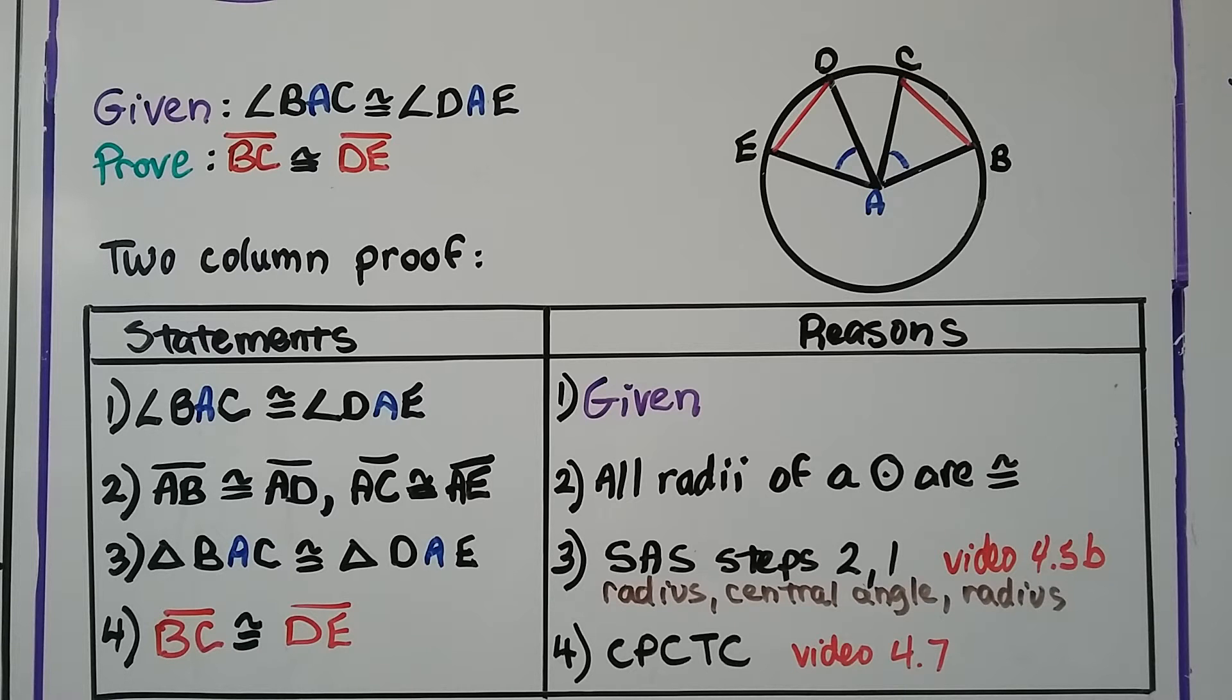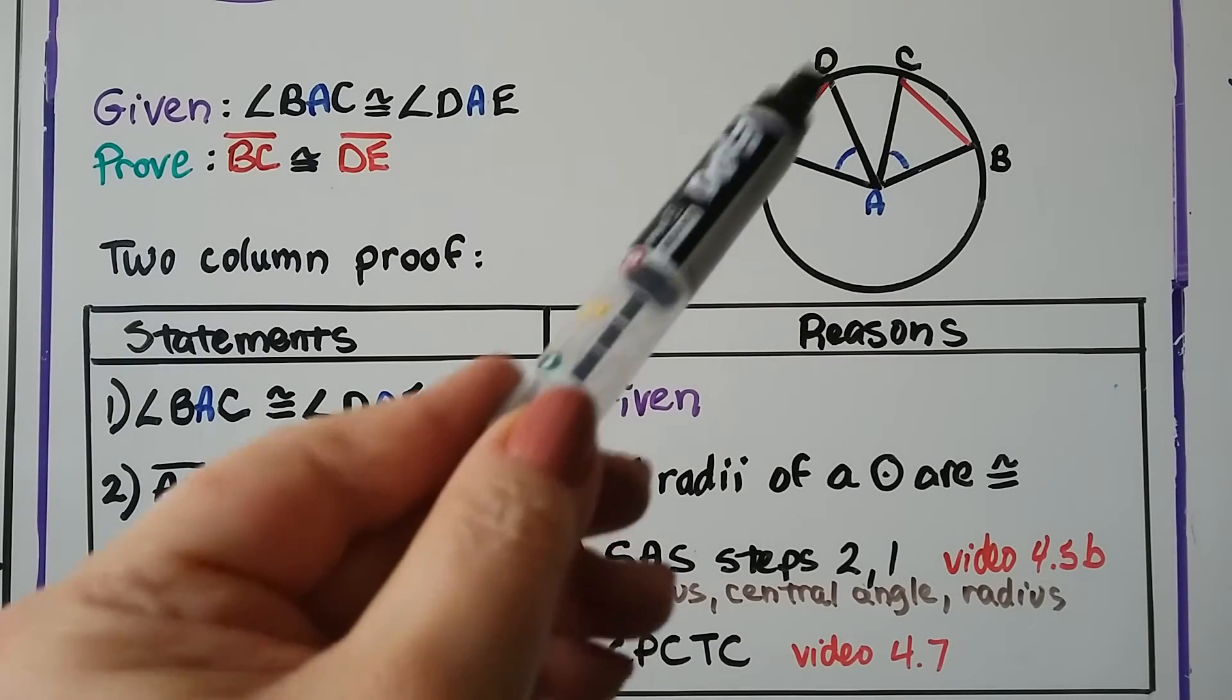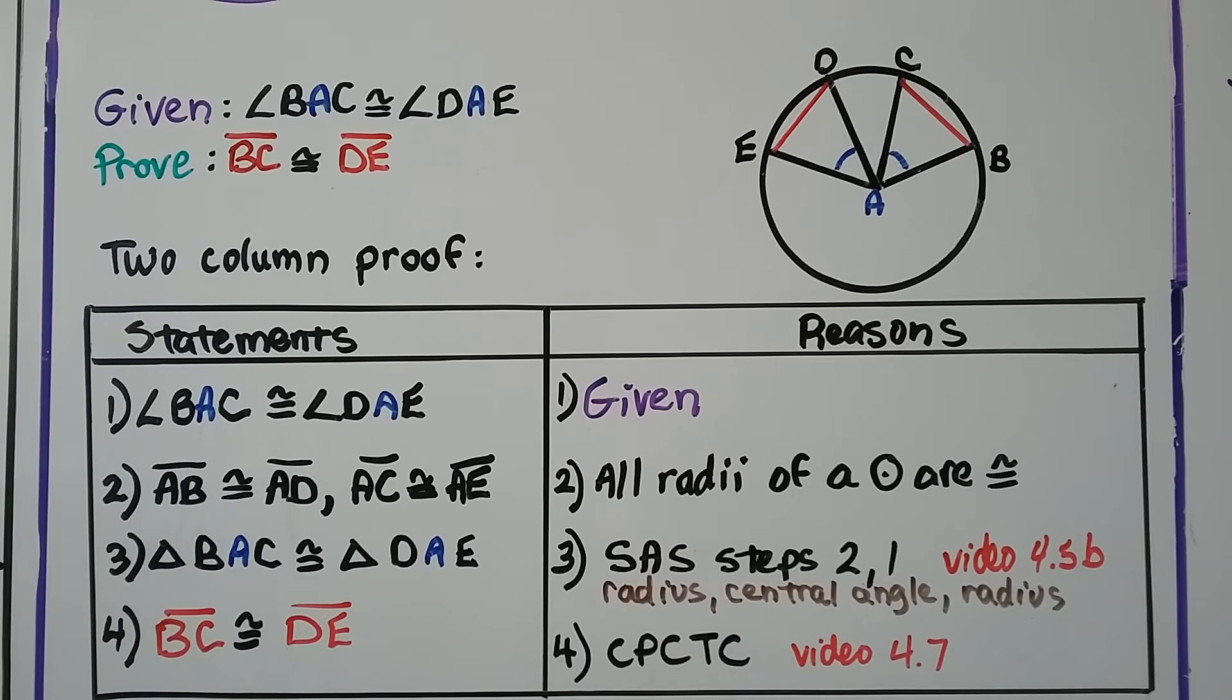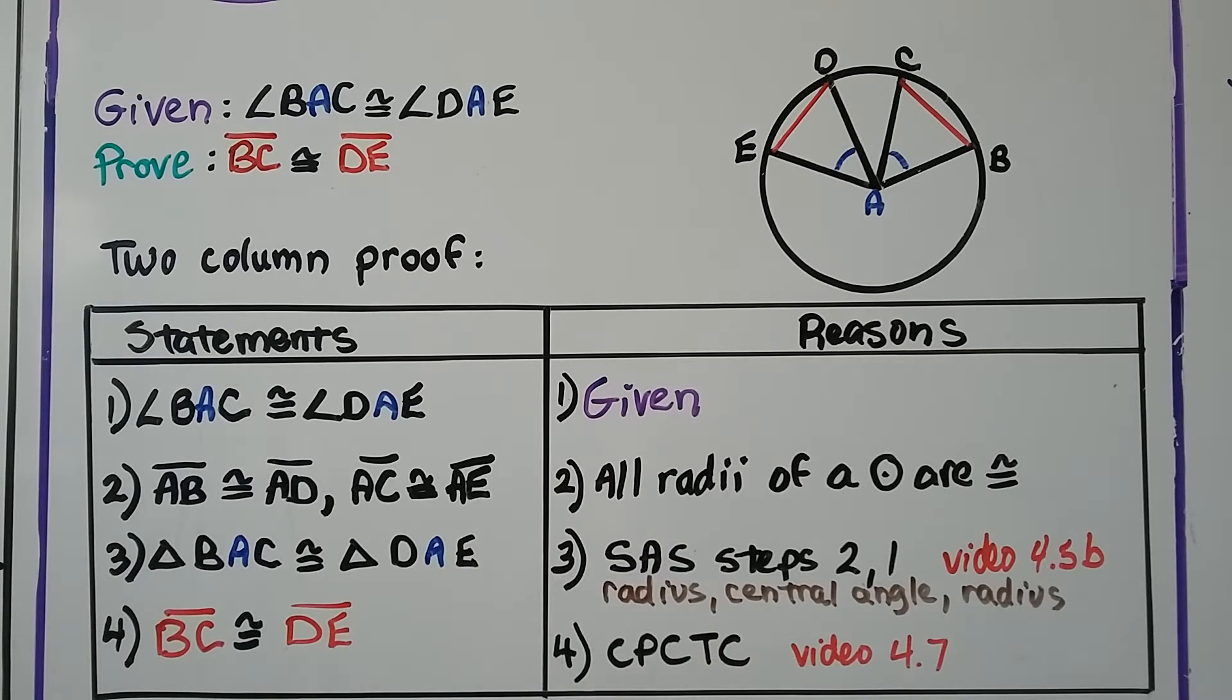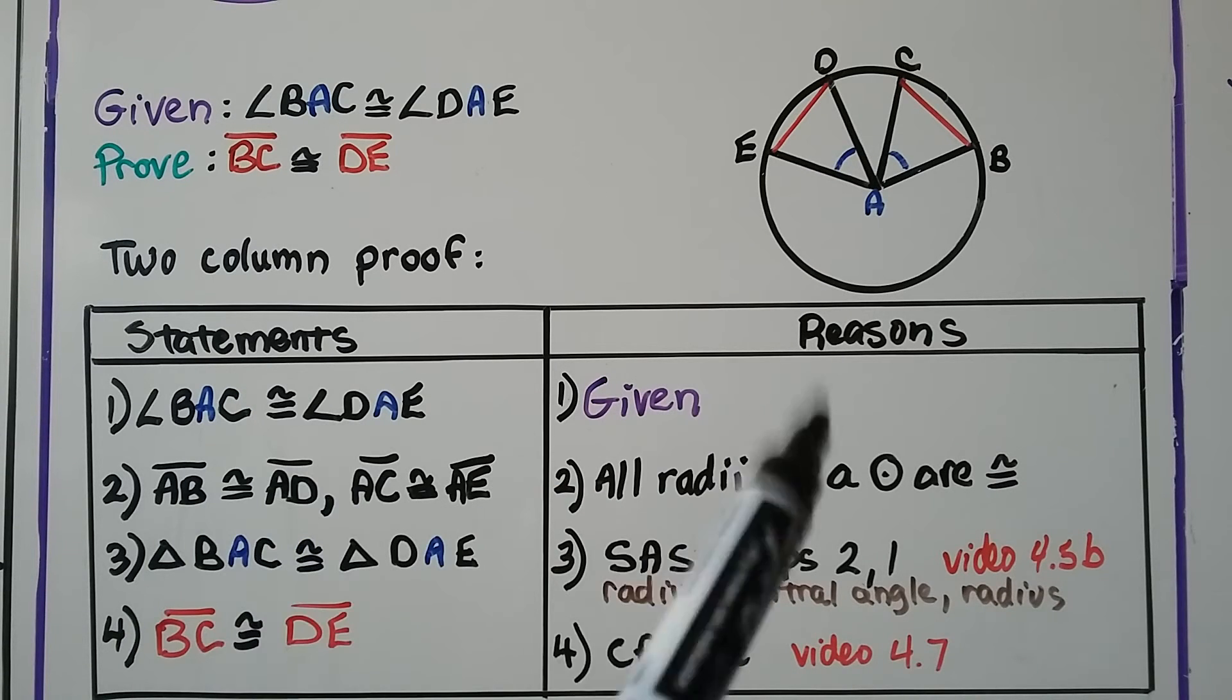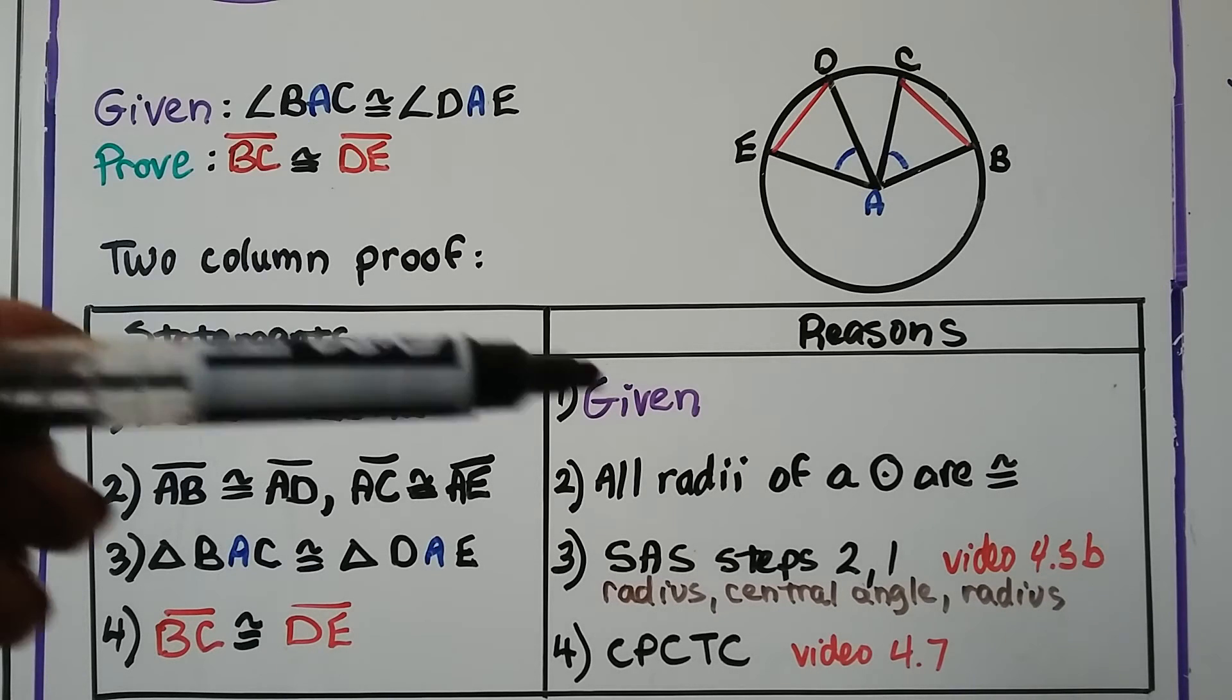So here's a two column proof. And we need to prove that segment BC, this segment right here, is congruent to segment DE, this segment right here. And it's given us that angle BAC, this angle here, is congruent to DAE, this angle here. So we have our statements and our reasons. And number one, we have angle BAC is congruent to angle DAE, and that was given.